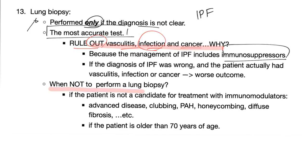When not to perform a lung biopsy: number one, if the patient is not a candidate for treatment with immunosuppressants, because there is no point. Or if the patient is older than 70 years of age — in this case, he's probably going to die from heart disease or diabetes, not from fibrosis in his lungs.